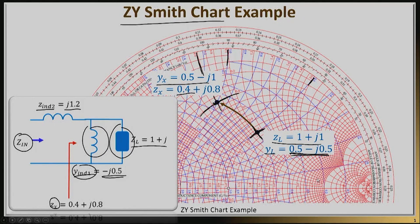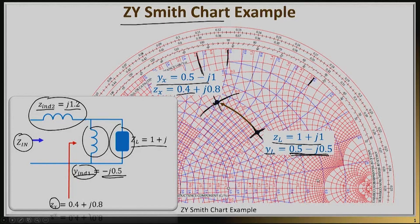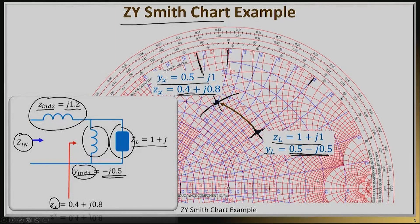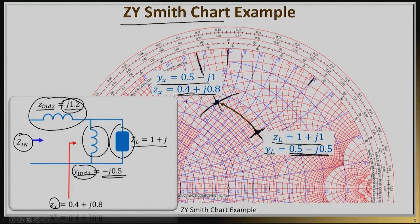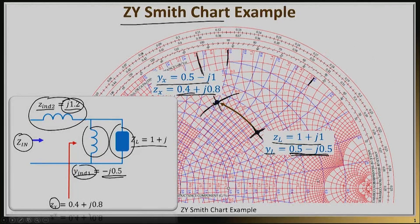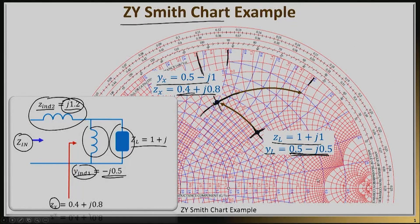Now I have to add my second inductance. It's in series, so I'm working with impedances, not admittances. I take the impedance 0.4 plus j0.8 and add j1.2. Adding j1.2 makes the imaginary part equal to j2. I keep my real part constant, moving along this circle with real part 0.4 constant until I hit this circle with imaginary part 2.